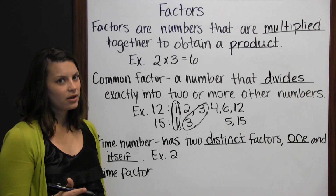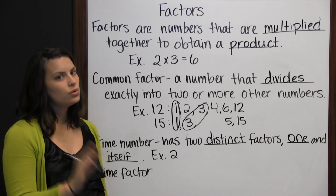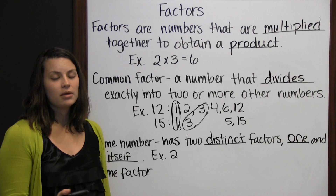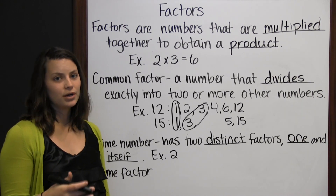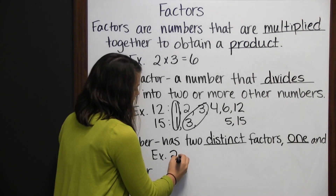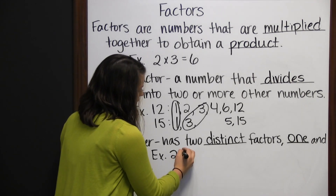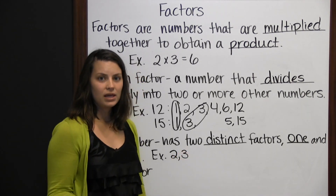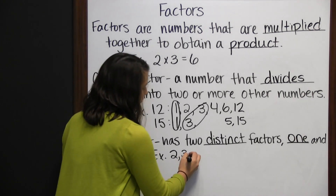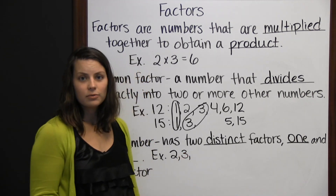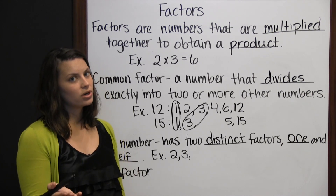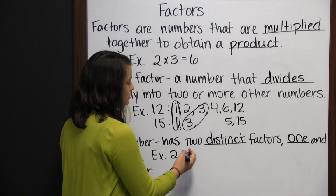So 1 is commonly thought of as neither prime nor composite. A composite number is a number that has more than 2 factors. So 2 would be the first prime number, then 3, because 3 has only 2 factors: 1 times 3 is 3. 4 would be composite, since 1 times 4 is 4, and also 2 times 2 is 4.